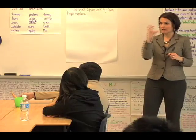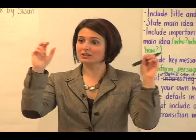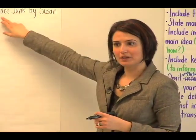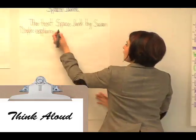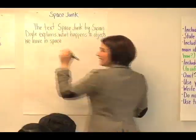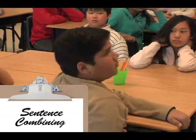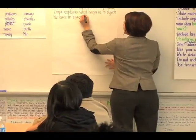How space junk can occur in earth and space. So it's describing how space junk can occur as well as how space junk can affect us. So I'm going to combine both of those ideas and attach it to the beginning of the sentence. 'The text Space Junk by Susan Doyle explains what happens when we leave these objects in space.' When we go on space missions. So, we leave in space during space explorations.